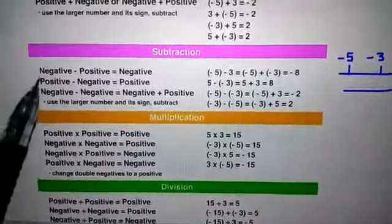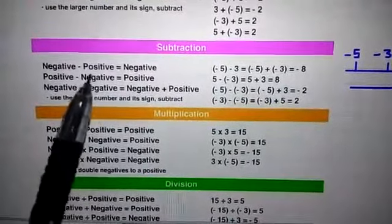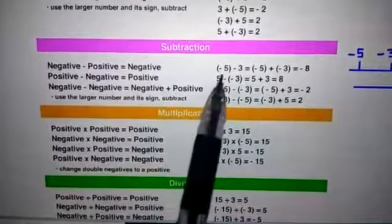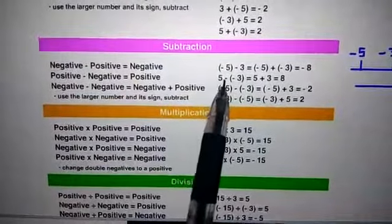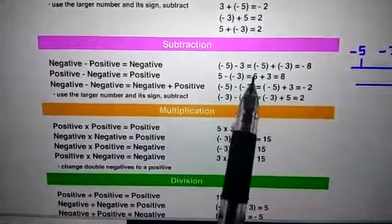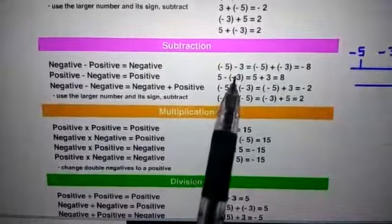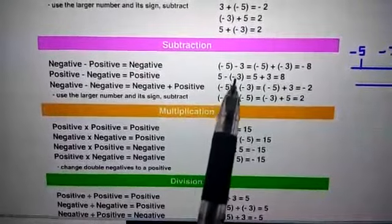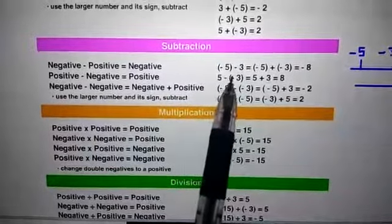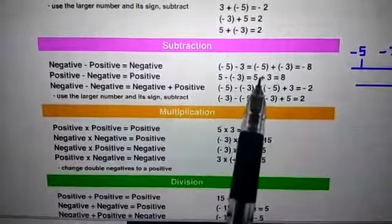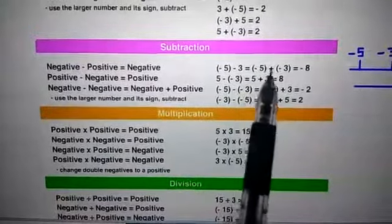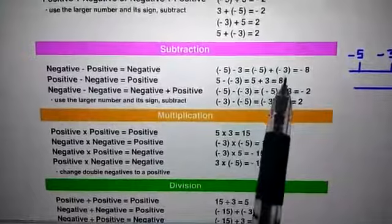If we subtract a negative from a positive, the result will always be positive. For example, subtracting minus 3 from 5: we do sign change, so minus and minus become plus. When we add two positive integers, the result will always be positive.